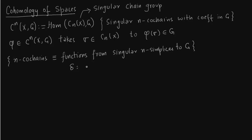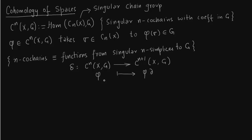Now we talk about the co-boundary map: how do we go from one singular n-cochain group to another? Basically, you take a map φ and it gets mapped to φ∘δ. This will be clear from a diagram which we draw now.